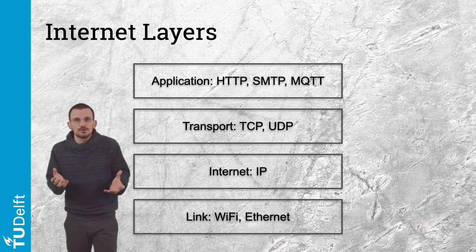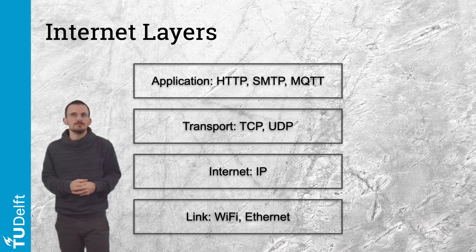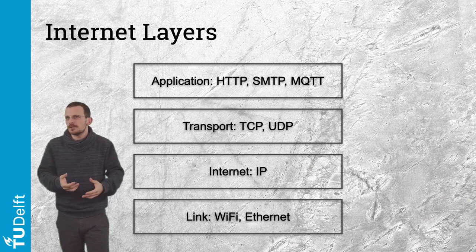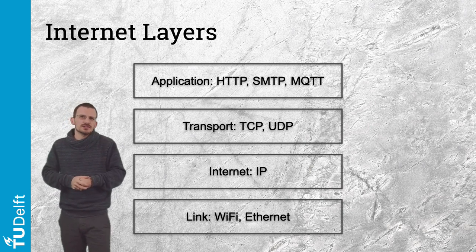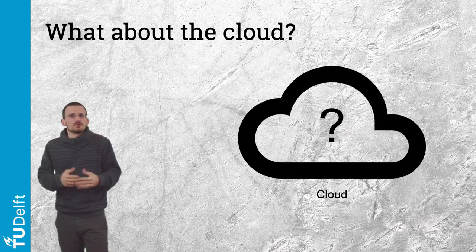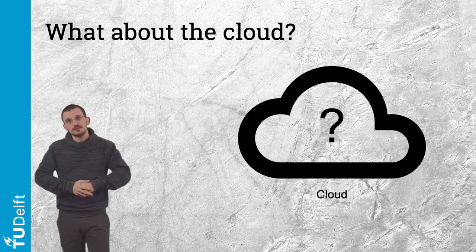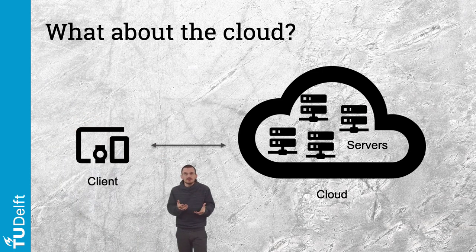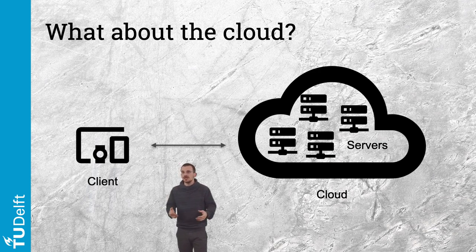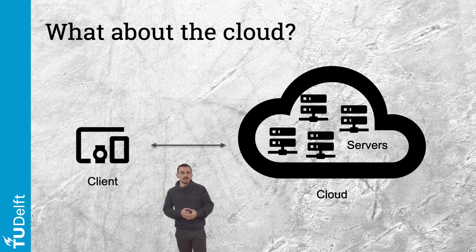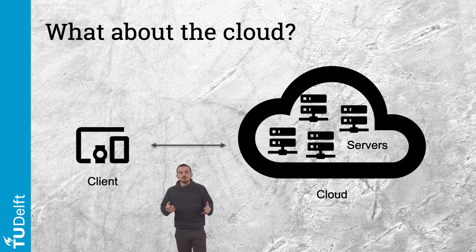We've got a brief overview of what happens between two computers exchanging information over the internet. But you might ask: what about the cloud that everyone is talking about? Well, the cloud is just an abstraction to hide a set of servers that can be reached to provide services — not only web pages or emails, but also ingesting, processing and visualizing sensor data, broadcasting live video events, artificial intelligence applications, calculating your shortest route on Google Maps, or even answering on Amazon Alexa.